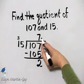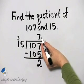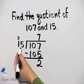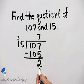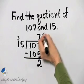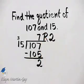But since this difference is less than my divisor of 15, I'm okay. And my quotient is 7 remainder 2.